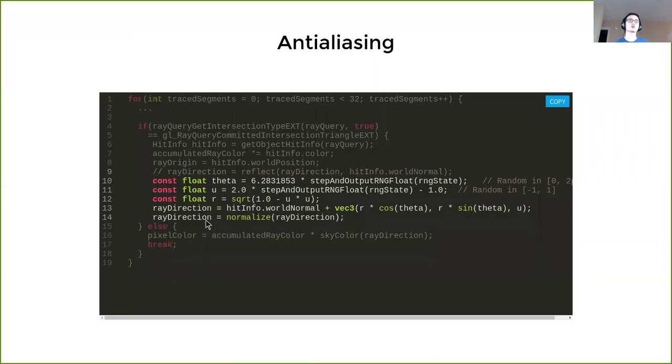The code here is also quite simple. Instead of having a perfect mirror reflection, we generate the point we want in spherical coordinates, and then we just do some calculation to transform the spherical coordinates into Cartesian coordinates. And then we get the direction of our scattered ray.